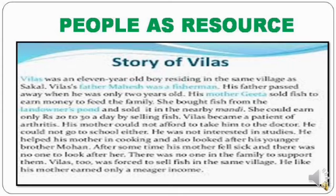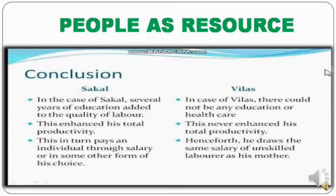Villas became a patient of arthritis, and his mother could not afford to take him to the doctor. He could not go to school either and was not interested in studies. He helped his mother in cooking and looked after his brother Mohan. After some time, his brother fell sick and there was no one to support the family, so Villas too was forced to sell fish and earned only a meager income.